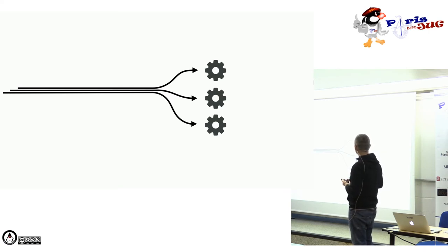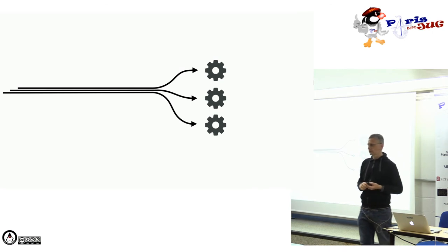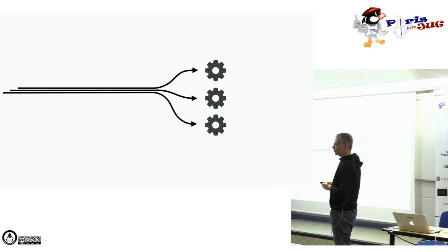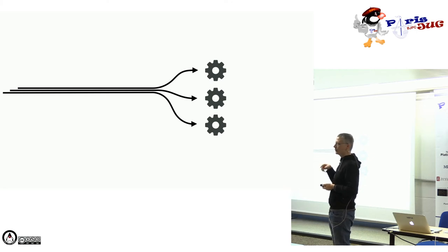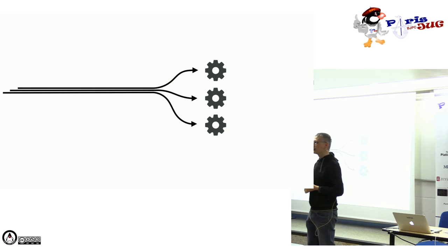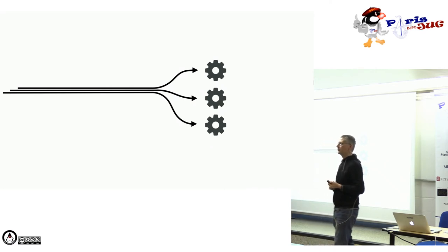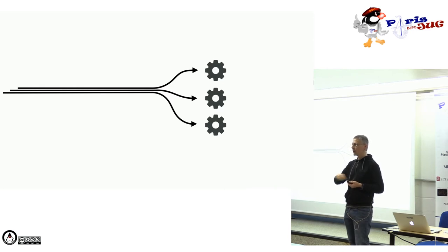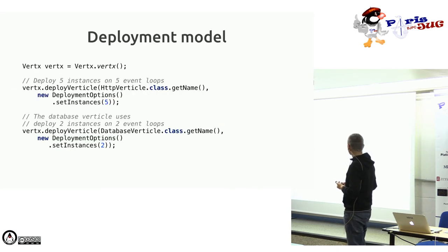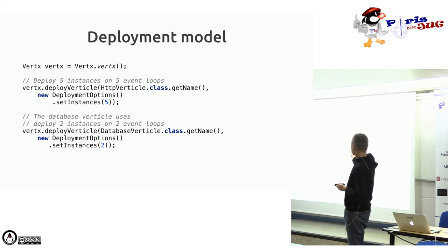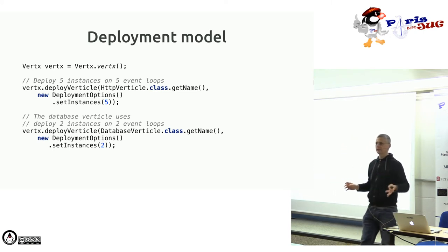Dans notre cas, chaque connexion est dispatchée sur un cœur différent. On peut aussi faire `undeploy` et `deploy` de manière dynamique. Le modèle de déploiement permet de sizer différemment chaque composant : par exemple, cinq EventLoops pour le serveur HTTP et deux pour le Verticle de base de données. Et comme c'est distribué, via l'EventBus, on peut distribuer l'application sur différentes JVM.